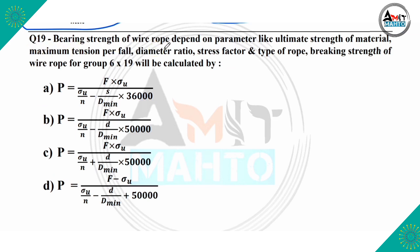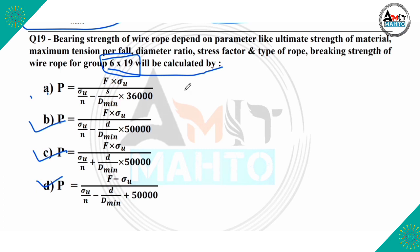Question number 19: bearing strength of wire rope depends on parameters like ultimate strength of material, maximum tension per fall, diameter ratio, stress factor, and type of rope. The breaking strength formula for 6×19 rope group — among the four given formula options — option B is the correct formula for the 6×19 rope type.